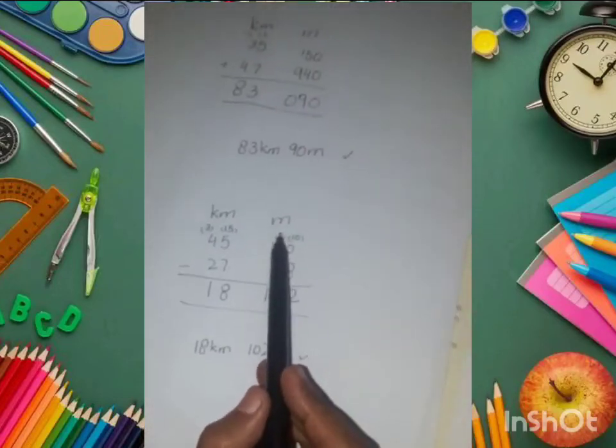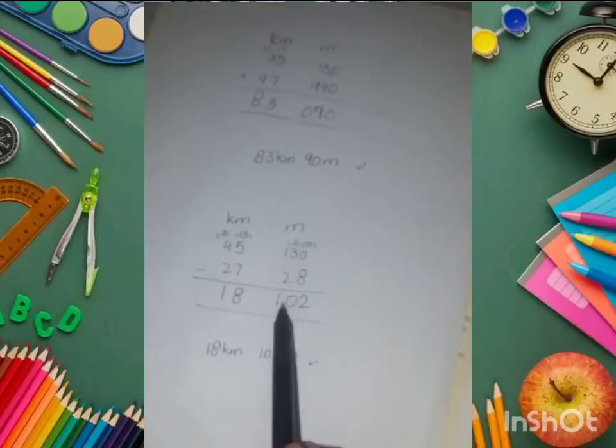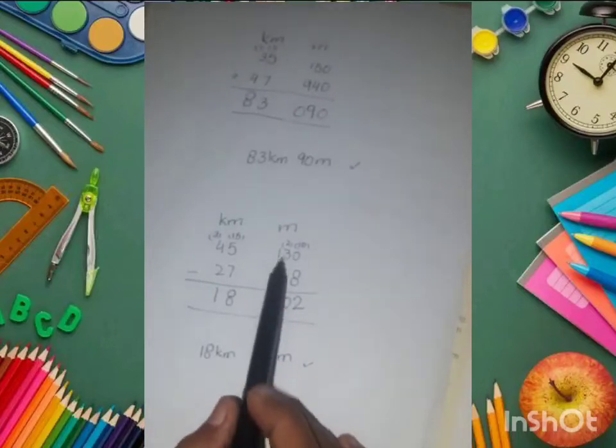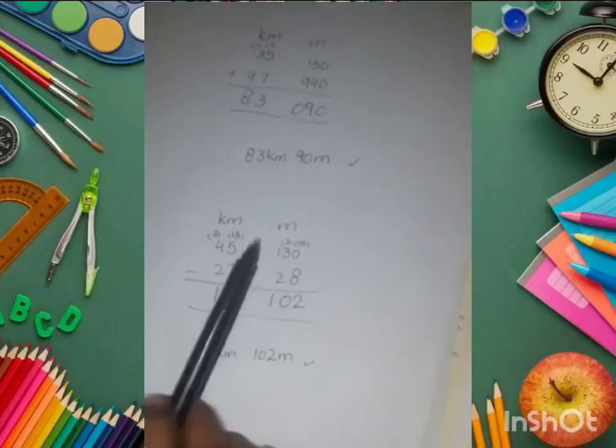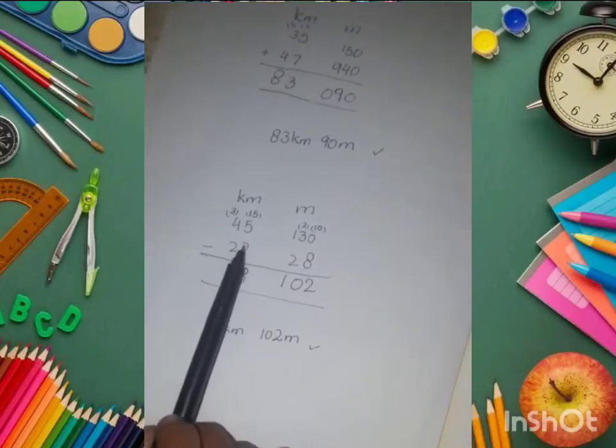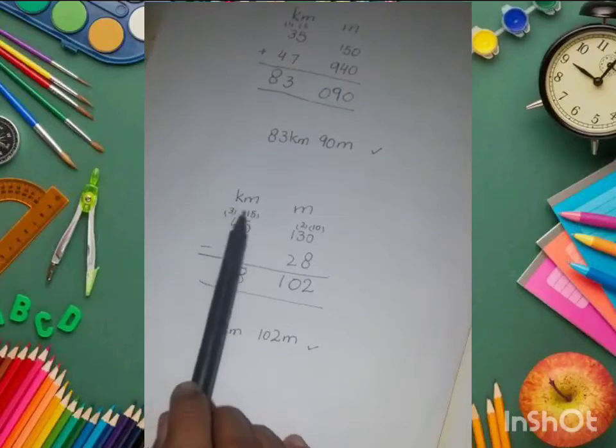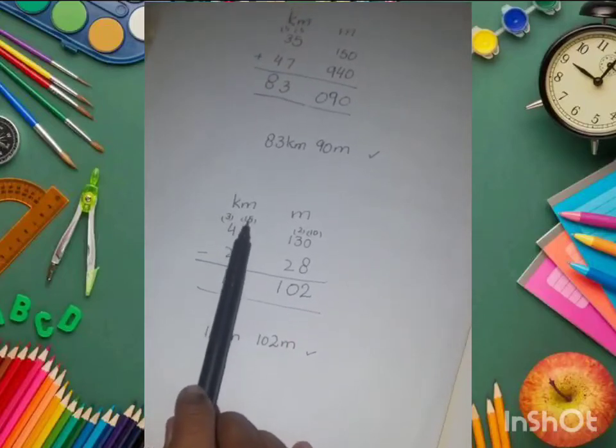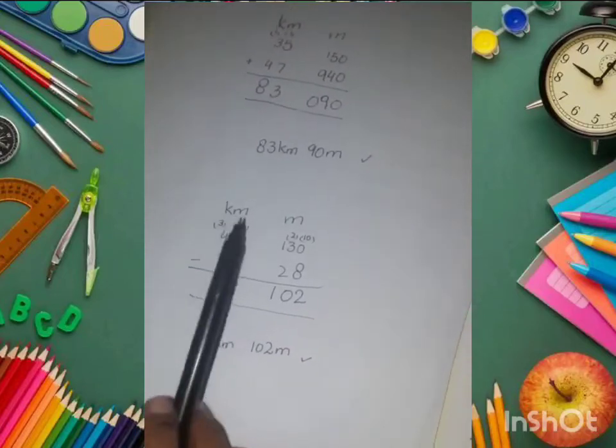We cannot subtract 7 from 5, so we borrow 1 and make it 15. We subtract 7 from 15; the answer is 8.